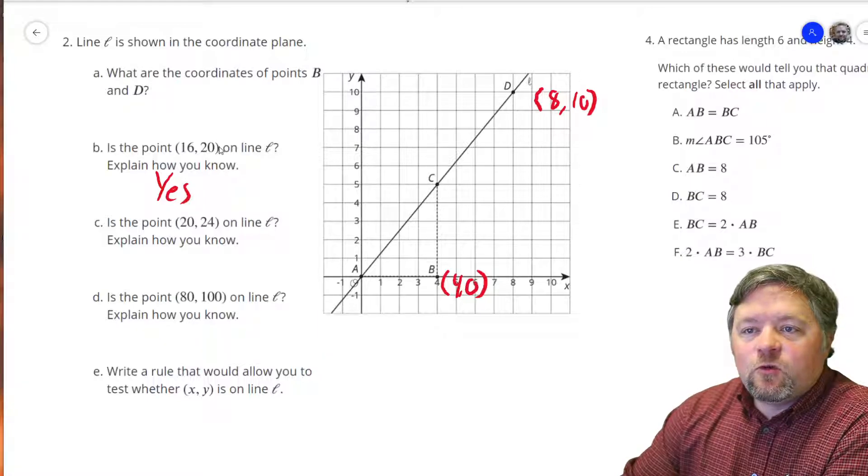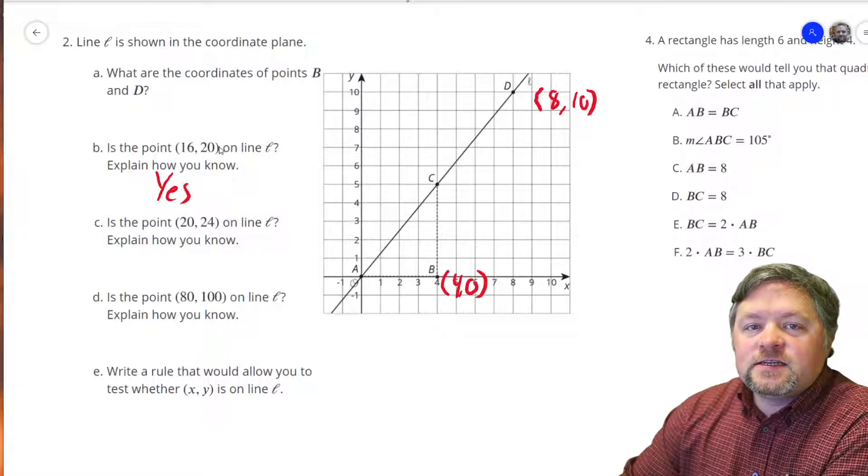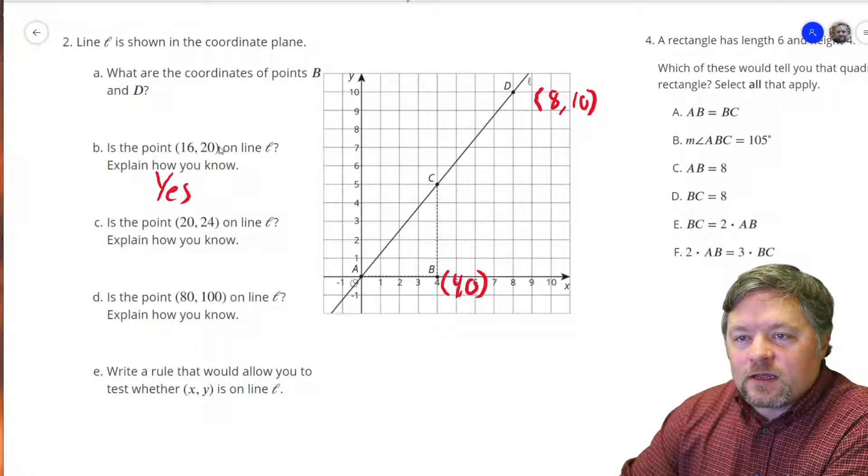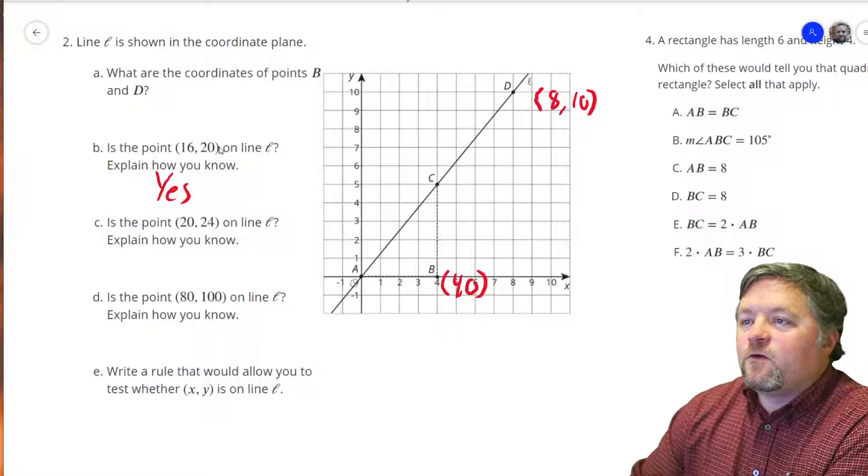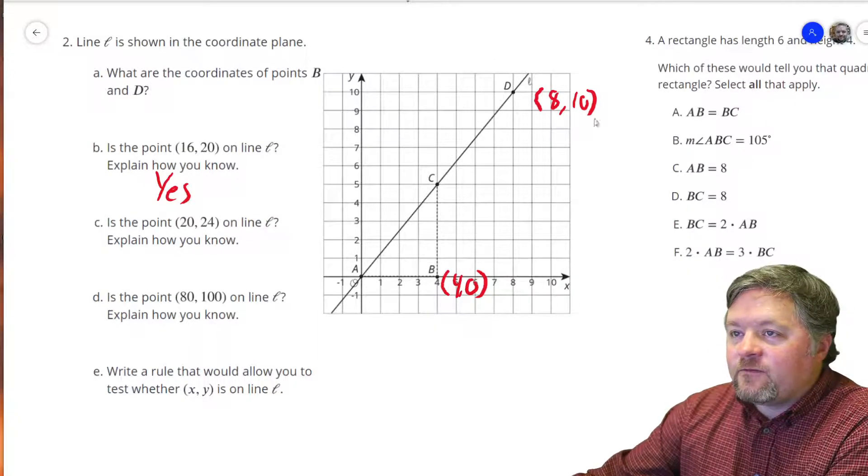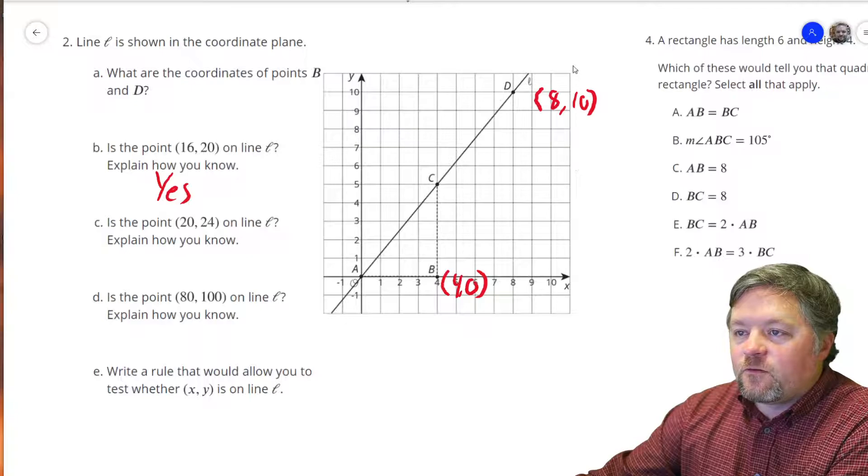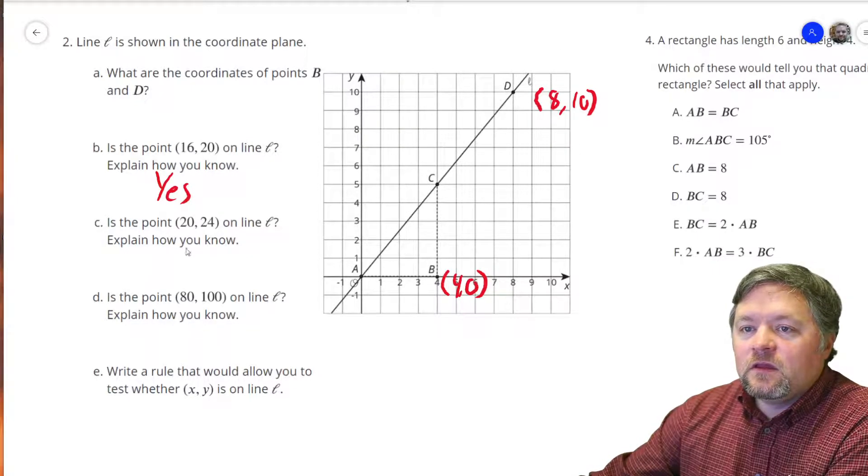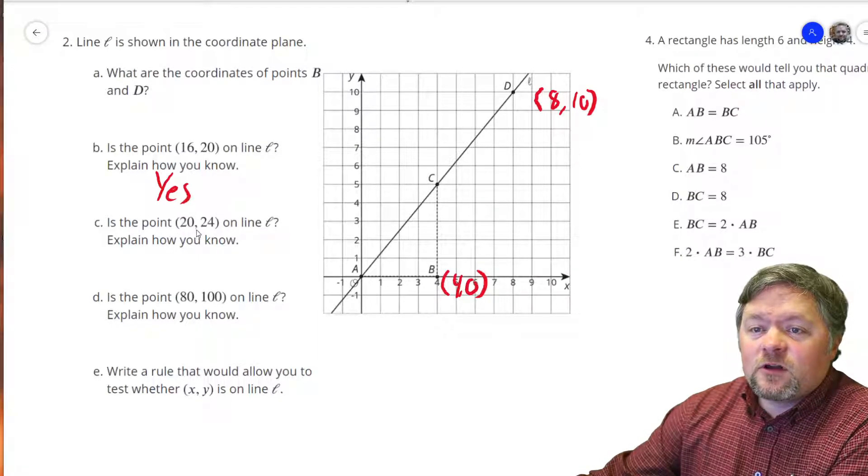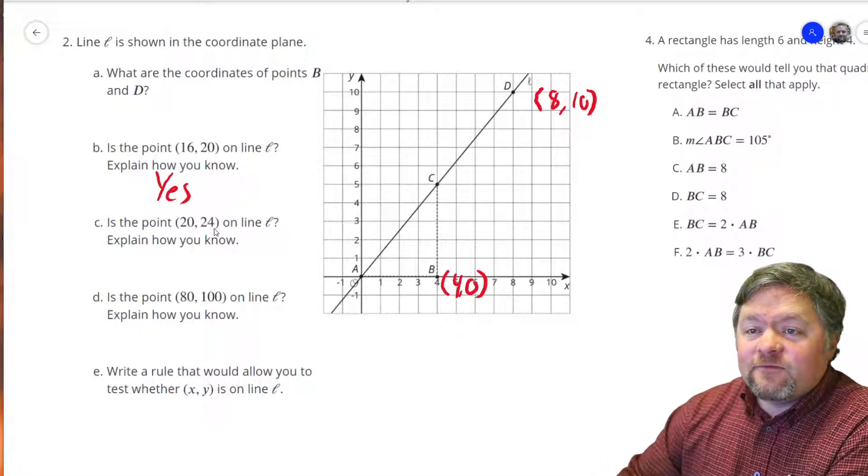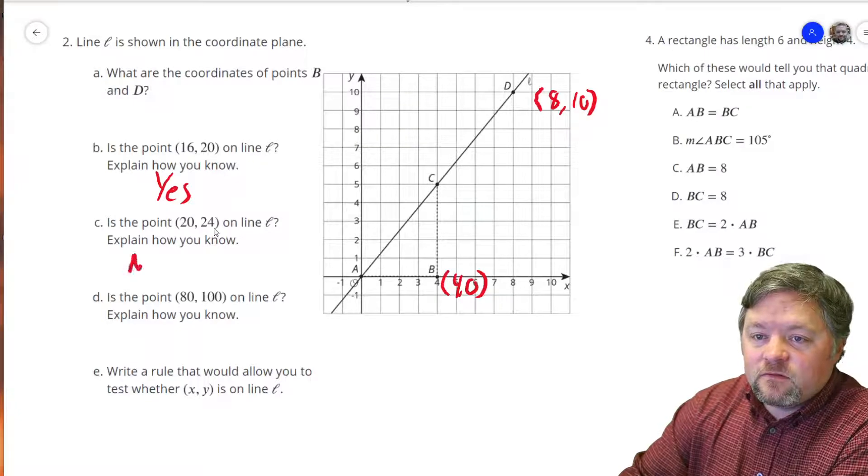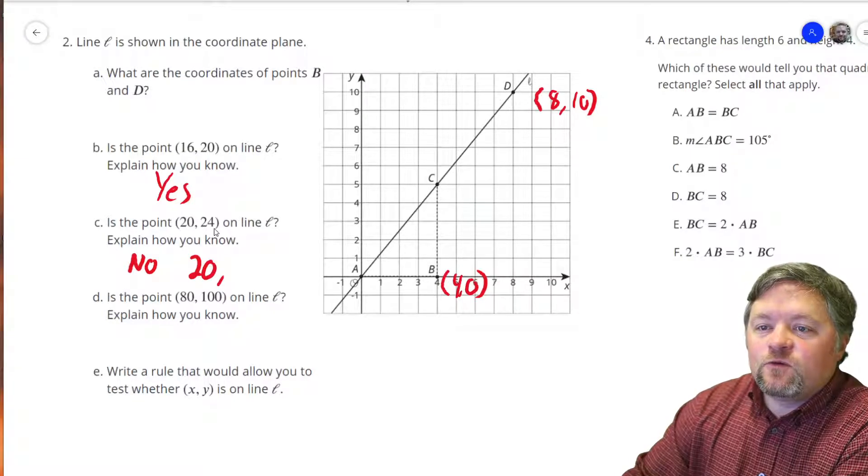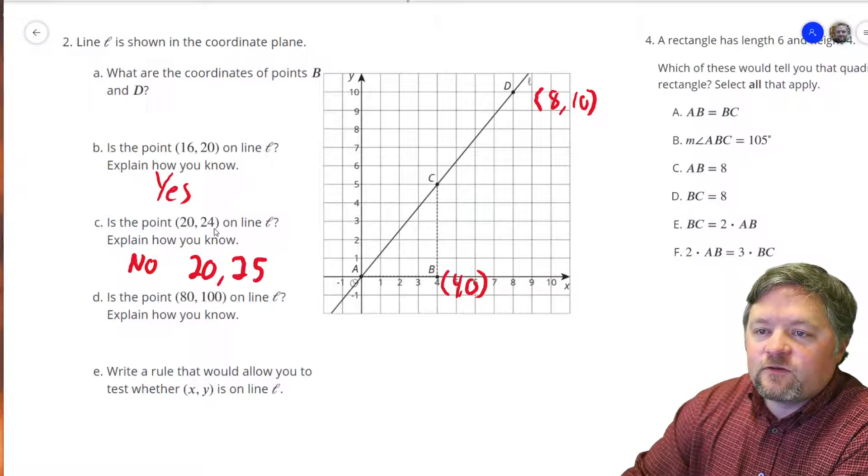How about 20, 24? Well, from 16, if we go forward 4 more, that would be 20. But if we go forward 4, we go up 5. If we go forward 4, we go up 5. So if we're at 20, we would be at 25. No, because at 20, at an x value of 20, we're at a y value of 25.